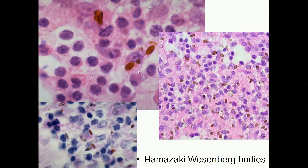Hamasaki-Wesenberg bodies consist of lipofuscin. They are also seen in lymph nodes — not only in lymph nodes affected by sarcoidosis, but also in the reactively changed lymph nodes in the region drained by areas affected by sarcoidosis.